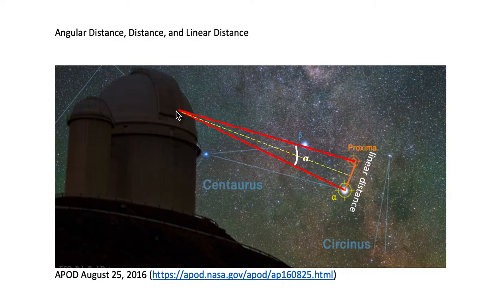The line coming from the observatory to Proxima Centauri, the red line, and the other red line going from the observatory to Alpha Centauri,